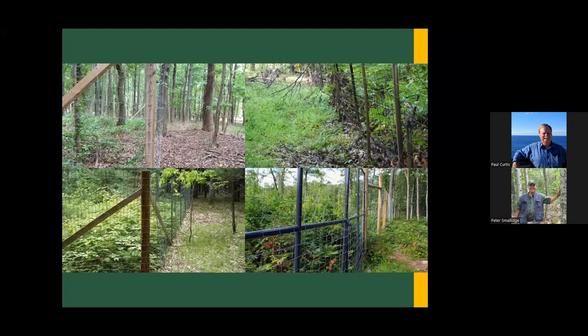Numerous fencing studies have been done around New York State and they all show pretty much the same results. You've got a stand getting adequate light — less than 50-60% canopy cover — with a good amount of sunlight reaching the forest floor. Within two or three years after putting a fence up to exclude deer, you see dramatic changes in vegetation inside and outside the fence. These fences are useful from a research standpoint and also from an extension education standpoint, so people can understand the driving forces for forest regeneration.